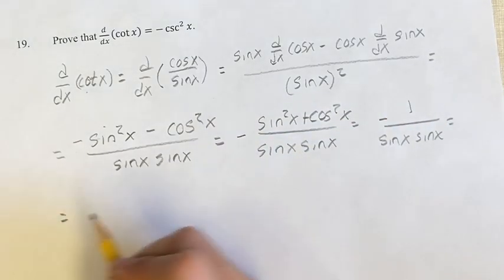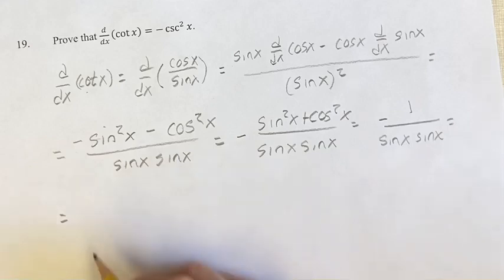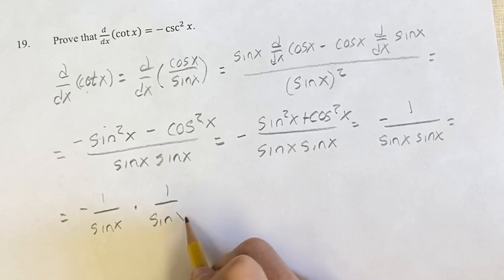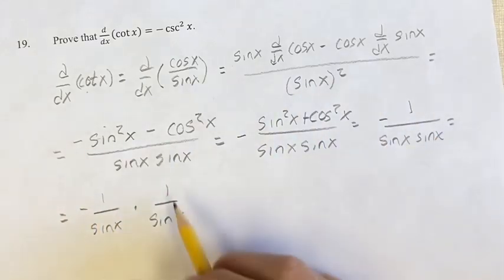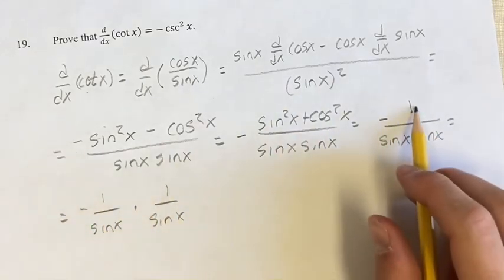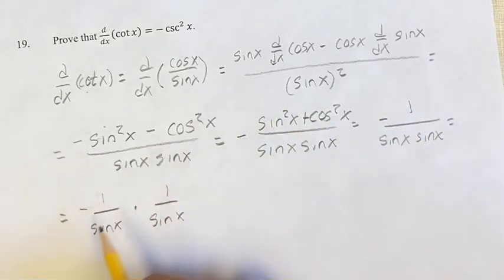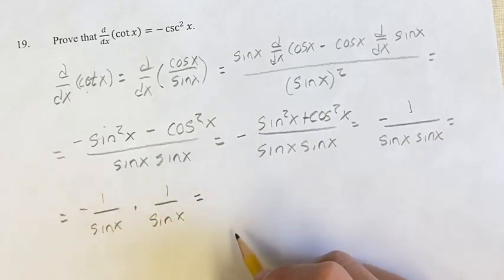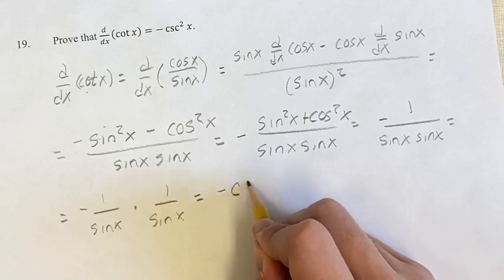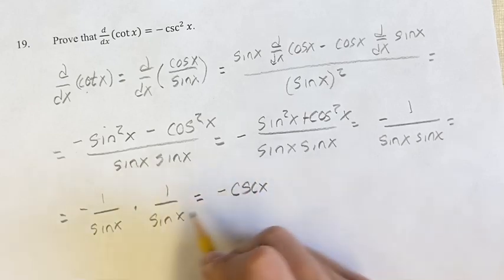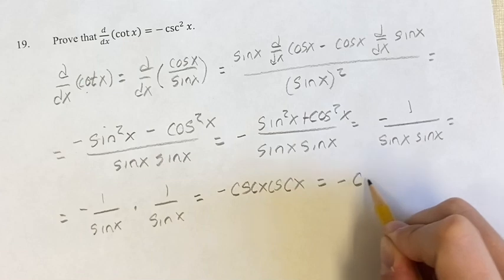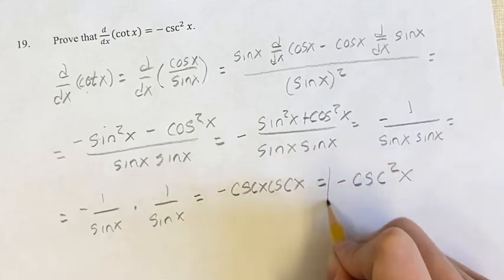If we want to separate the denominator, we can say this is negative 1 over sine x times 1 over sine x. Re-multiplying, we have negative 1 times 1 is negative 1, and sine x times sine x is sine squared x. Since 1 over sine x is cosecant x, this is negative cosecant x times positive cosecant x, which is negative cosecant squared x.